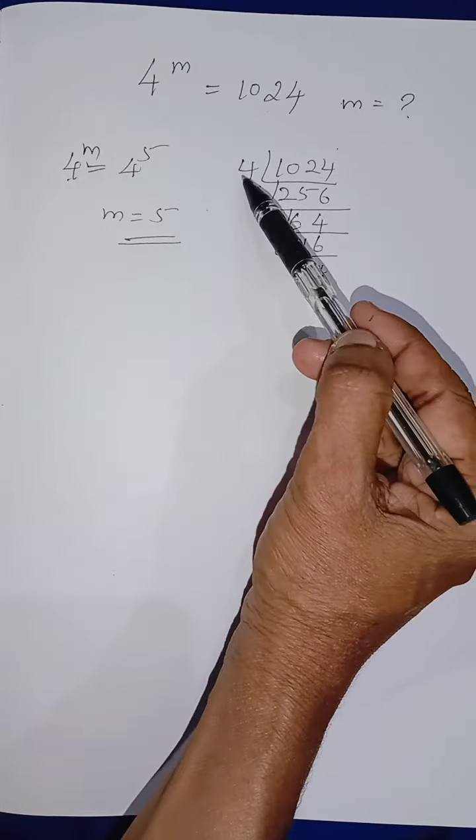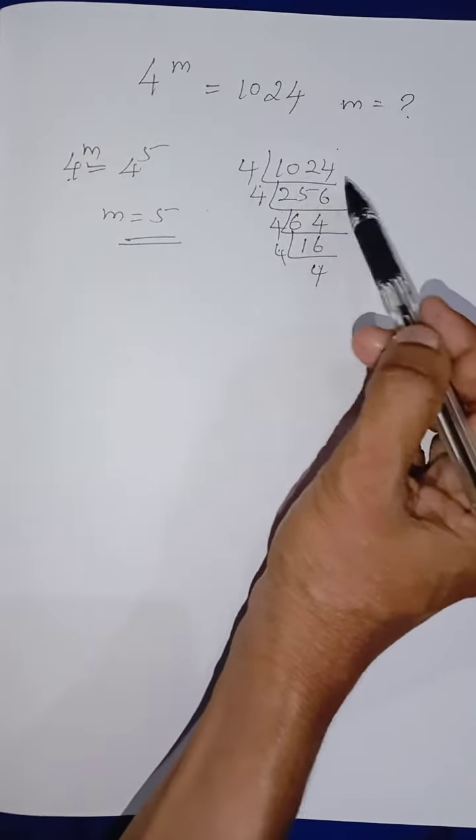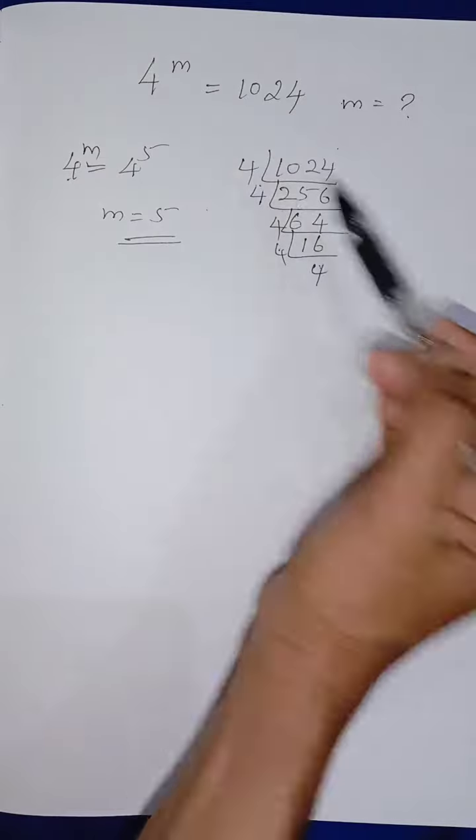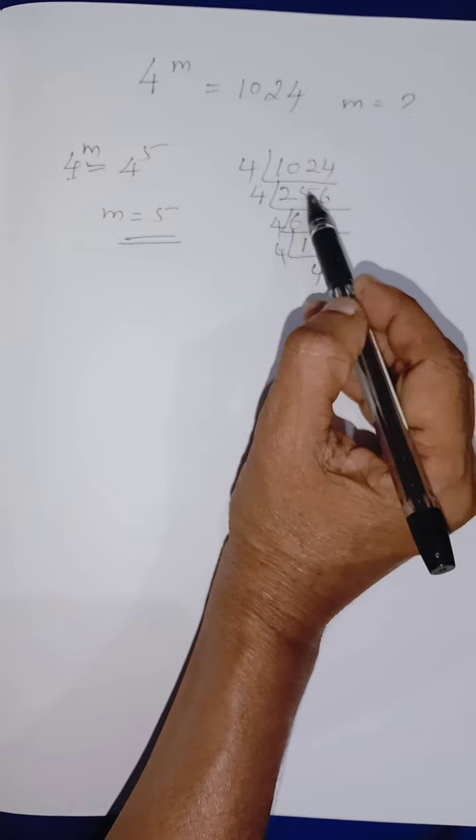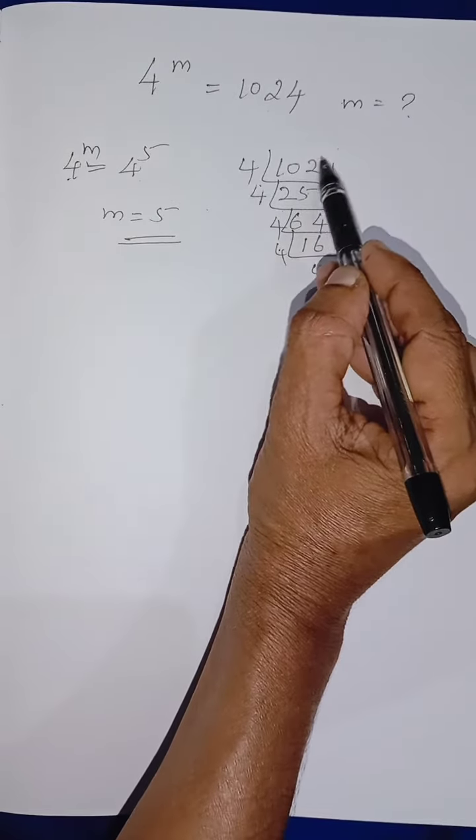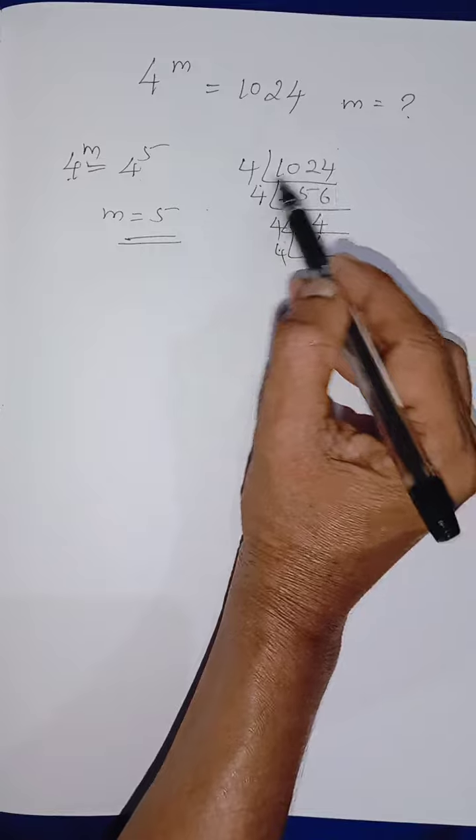So we are dividing with 4th table. 1024, you have to divide by 4. 4th table how many times? 2 4s are 8, remaining 2 will be there. So 22, 5 4s are 20 and remaining 2 will be here. So 6 4s are 24, giving us 256.